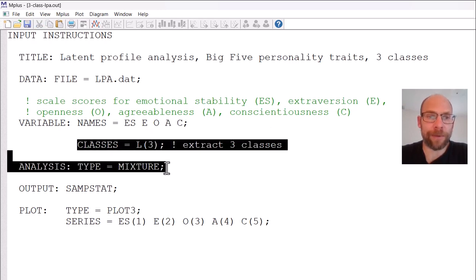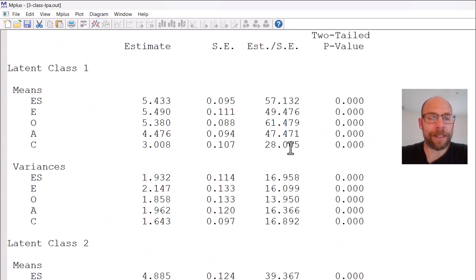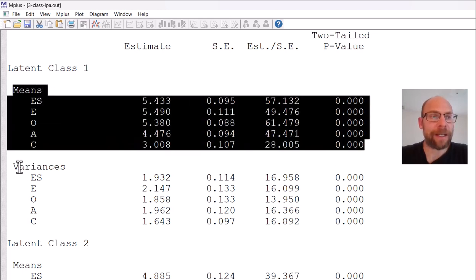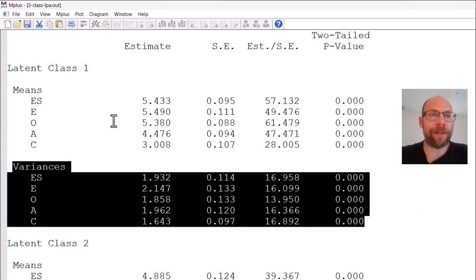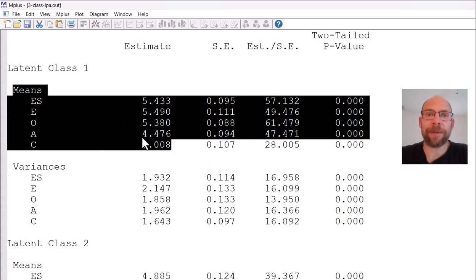Three classes were extracted here using the type equals mixture option in M plus. Let's take a look at what M plus gives you for a latent profile analysis when you go with the M plus defaults, when you don't specify anything special. Let's go down to the parameter estimates. By default M plus gives us class specific means and class specific variances. Typically of interest are especially the means of the indicator variables in each class because those give us the profiles that show how the classes differ in terms of their mean profiles.